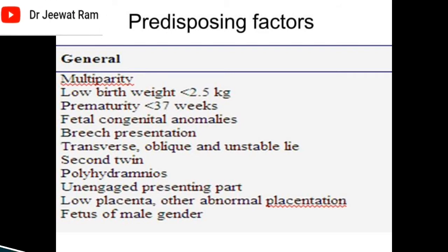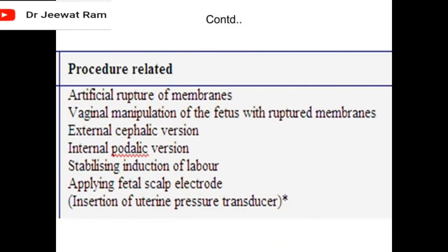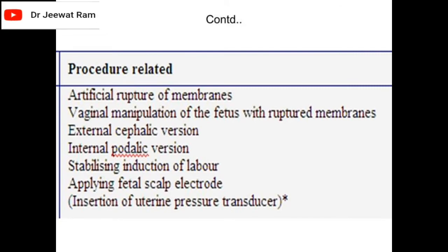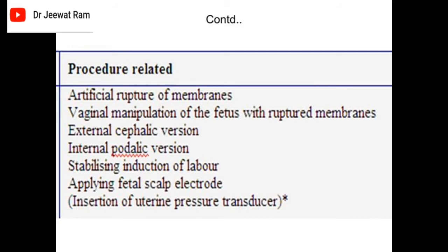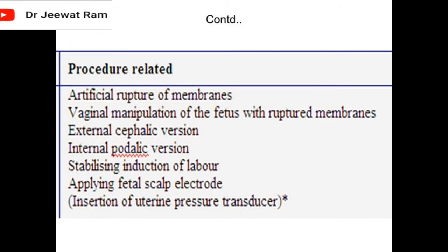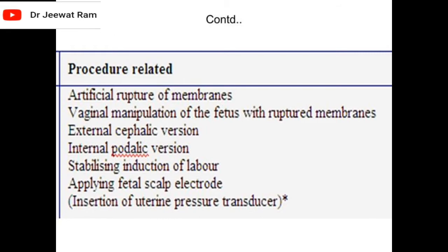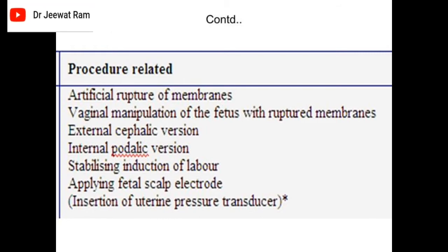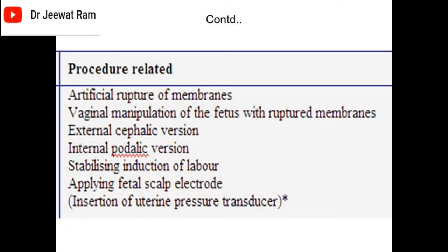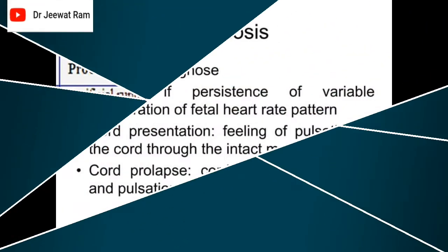Further predisposing factors include: fetus of male gender, artificial rupture of membranes, vaginal manipulation of the fetus with ruptured membranes, external cephalic version, internal podalic version, stabilizing induction of labor, applying fetal scalp electrode, and insertion of uterine pressure transducer.